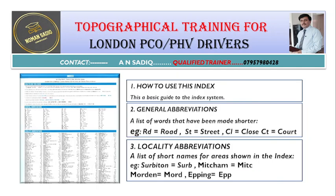This is the first page from where the index of the master atlas of greater London starts. It is actually an introductory page and it will let you know how to use this index. It will also let you know about general abbreviations and locality abbreviations.